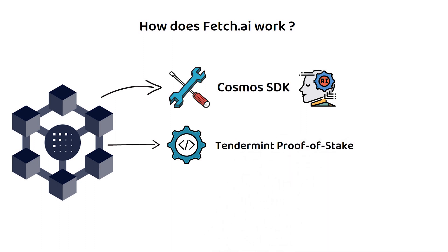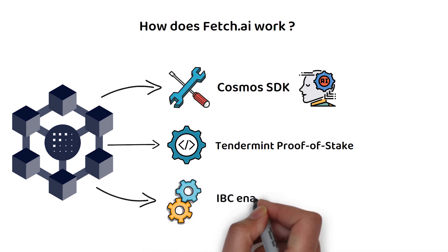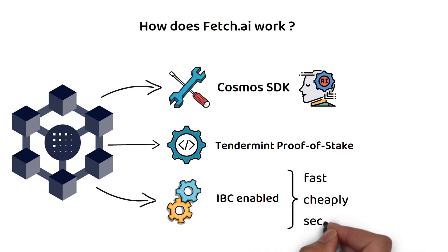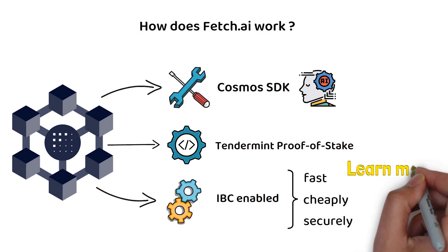Like all other Cosmos-based blockchains, it is fully interoperable with any blockchain built using the Cosmos SDK thanks to its inter-blockchain communication protocol being enabled. That means that tokens can be transferred fast, cheaply, and securely among those blockchains. If you are curious about how the Cosmos blockchain functions, I will leave a few links in the description below for you to check out.